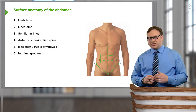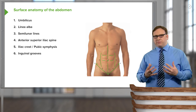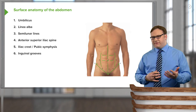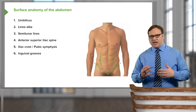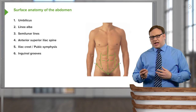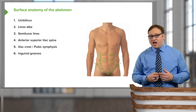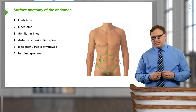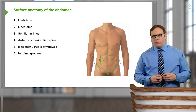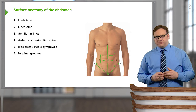These surface landmarks on the abdomen are really important in helping us observe if there's any scarring or damage that's occurred to this region. But this is a nice normal anterior aspect of the abdomen.